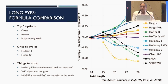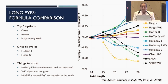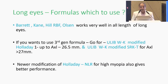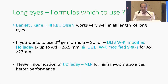A study done in 2018 by Melles showed that for long eyes the top three options were Olson, Barret, and the Haigis unadjusted formula. Ones to avoid were Holladay 1 and Hoffer Q. Notably, Holladay 2 has since been updated and improved, the Wang-Koch adjustment is now better, and Hill RBF, Kane, and EVO were not included in that 2018 study. Subsequently, for all long eyes, Barret, Kane, Hill RBF, and Olson work very well across all lengths. For third-generation formulas, use ULIB Wang-Koch modified Holladay 1 up to 26.5 mm and ULIB Wang-Koch modified SRK/T for axial length more than 27 mm.